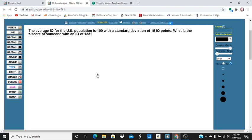So let's take a look at this problem. The average IQ for the U.S. population is 100 with a standard deviation of 15 IQ points. What is the Z-score of someone with an IQ of 133?